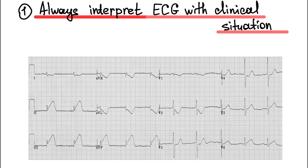The first feature: always interpret an ECG with the clinical situation. ST segment changes we can find in many situations, such as acute coronary syndrome, myocarditis, or tachycardia. We think about myocardial infarction if we see typical symptoms of ischemia — an older person with many comorbid illnesses. We need to exclude myocardial infarction first, because it is an emergency.